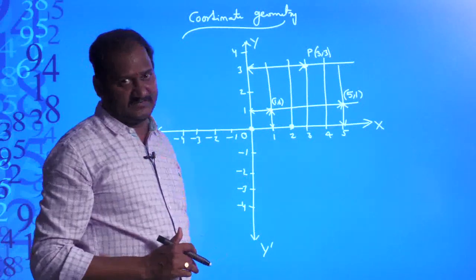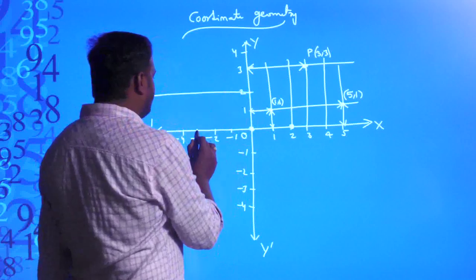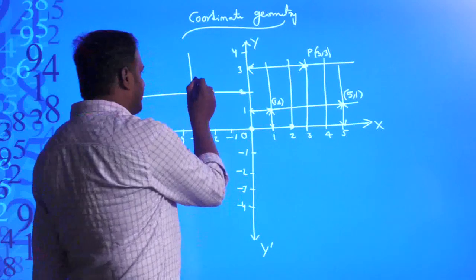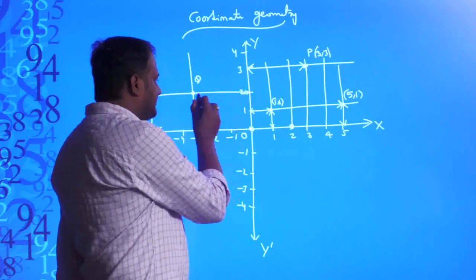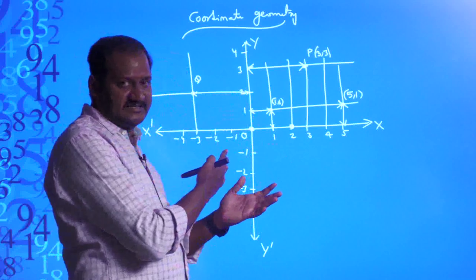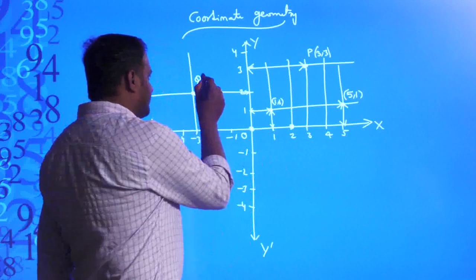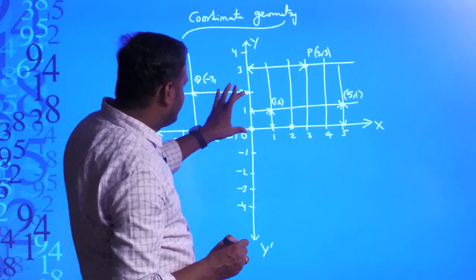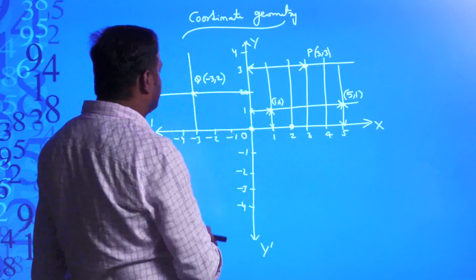Coming to the second quadrant: I draw a horizontal line through 2 and a vertical line from negative 3. The name of this point is Q. The distance of point Q from the y-axis is 3 units, but it is in the negative direction of x-axis, so it is written as negative 3. And the distance from the x-axis is 2, which is positive. So the point Q is (−3, 2).